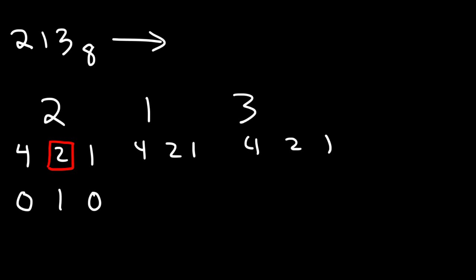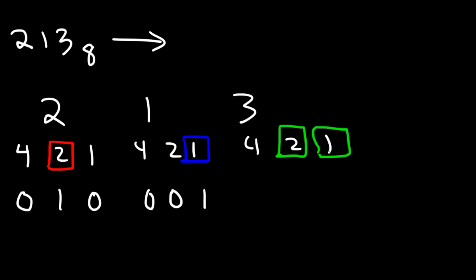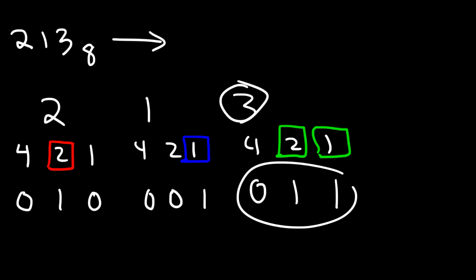Now for 1, I only need to use this number. So I didn't use the 4 and 2, so it's going to be 0, 0, 1. Now for 3, I need to use 2 and 1, because 2 plus 1 adds up to 3. So I didn't use the 4 — let's replace that with a 0 — and let's replace 2 and 1 with 1. So 3 as a binary number is 0, 1, 1.